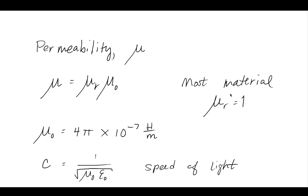For most materials like free space, air, or vacuum, mu-r is equal to 1 — pretty much like in electrostatics where we said epsilon-r is often equal to 1. Mu-nought is a constant: 4 pi times 10 to the minus 7th henrys per meter. It has a close relationship with the permittivity that's related to the speed of light.